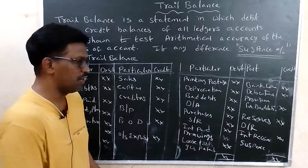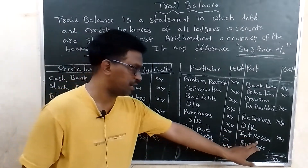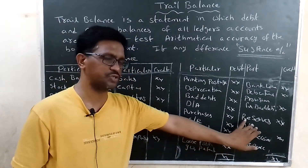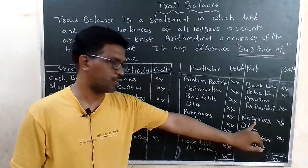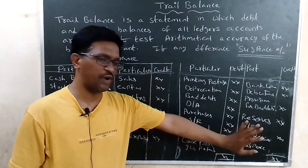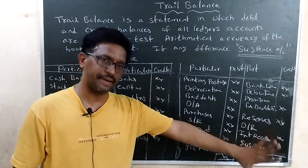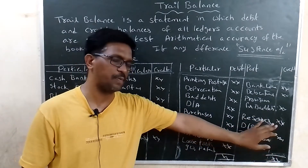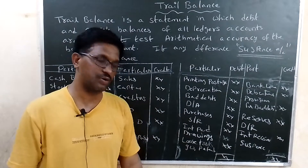Discount received, interest received, and reserves also show credit balance. Profit and loss account, revenue fund — all show credit balance. Provisions for bad debts and provision for tax — all provisions show credit balance.